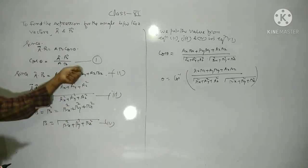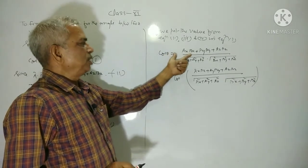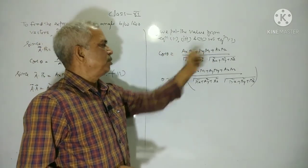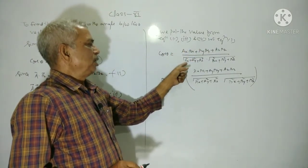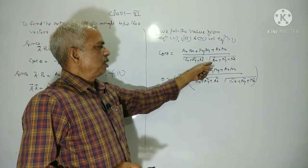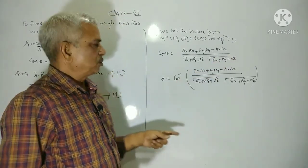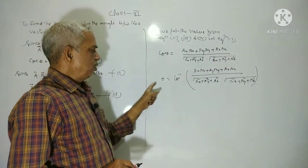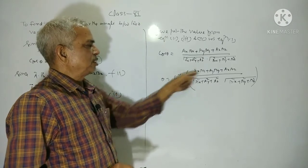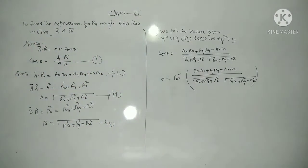Putting these values from the 2nd, 3rd and 4th equations into the 1st, we get cosθ equals AxBx plus AyBy plus AzBz upon root of Bx squared plus By squared plus Bz squared. This is how we can find the angle between the two vectors.